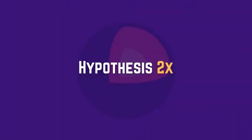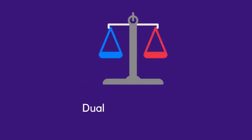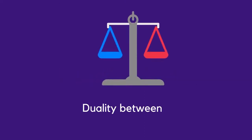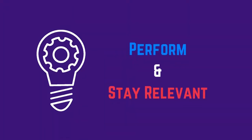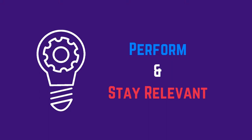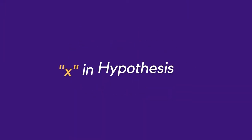At the core of studying octology is Hypothesis 2X. The 2 in Hypothesis 2X shows a study of the duality between the receptive and projective parts of org, which must be in equilibrium. The aim of this is to help organizations to be both performing and relevant. This first part is the dual nature of org, and this study is called orgmatics.